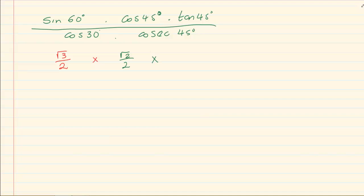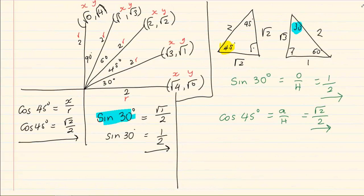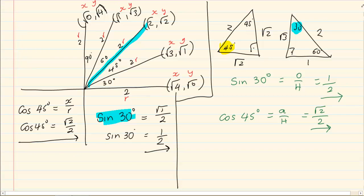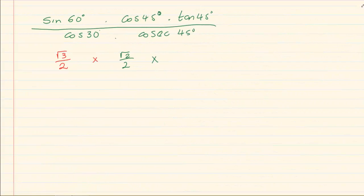Tan 45. Again, 45 line. X and Y are both root of 2. So it would be Y over X which is root of 2 over 2.